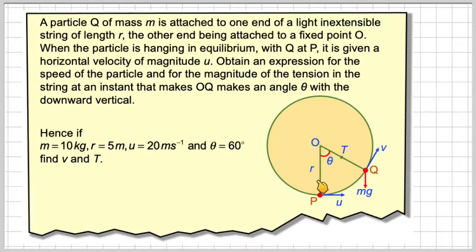When the particle is hanging in equilibrium with Q at P, it is given a horizontal velocity of U. Obtain an expression for the speed of the particle and for the magnitude of the tension in the string at the instant that OQ makes an angle of theta with the downwards vertical, so this angle here being theta.